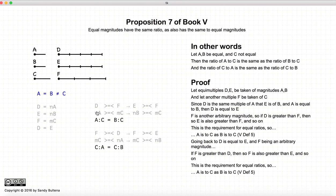So there we have shown that if we have three lines, or three magnitudes, excuse me, our lines are just used to represent the magnitudes, if a equals b, which is not equal to c, then the ratio a to c is equal to b to c, and the ratio c to a is equal to the ratio of c to b.